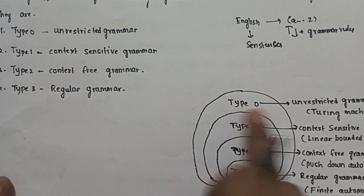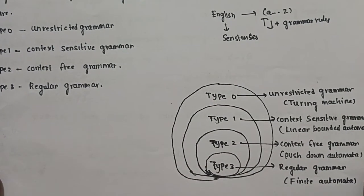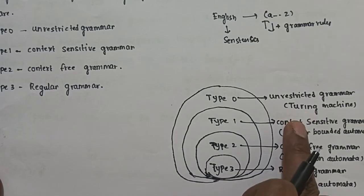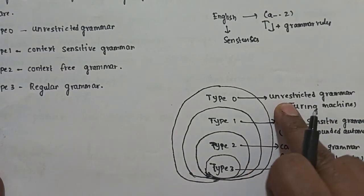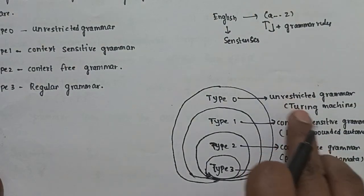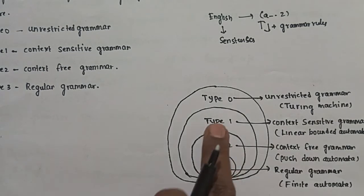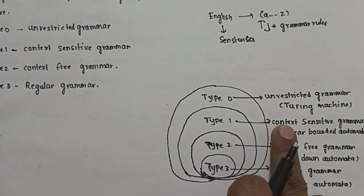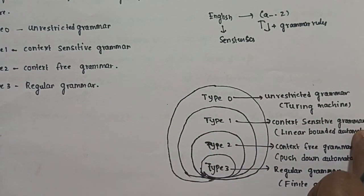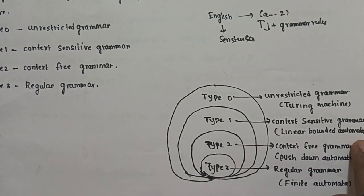Coming to type 0: this type 0 grammar is unrestricted grammar, and it will be accepted by the Turing machine. Next is type 1, which is context-sensitive grammar, accepted by the linear bounded automata.